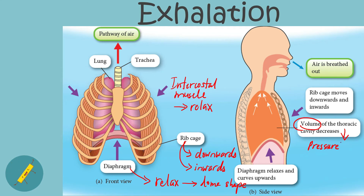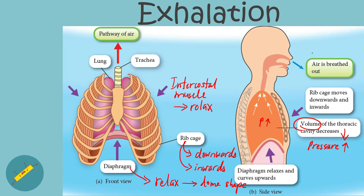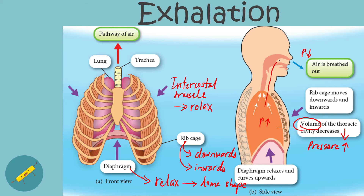Hence, the volume inside the thoracic cavity decreases. The decrease in volume causes the pressure inside the thoracic cavity to increase. Because the pressure inside the thoracic cavity is higher than the pressure outside, the air is pushed out to the surrounding.